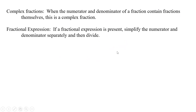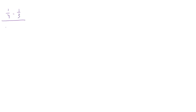We're going to have complex fractions — these are things where the numerator and denominator of a fraction contain fractions themselves. One way to solve these is the fractional expression way: if there are fractions in the numerator and fractions in the denominator, first you simplify the numerator, then simplify the denominator, and then you have a fraction over a fraction which you divide. Let's go through one. Say we have one fourth minus one third, divided by one fourth plus one third.